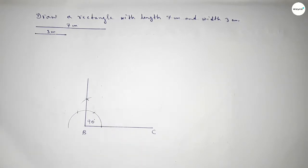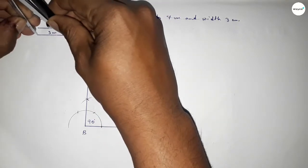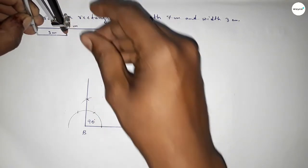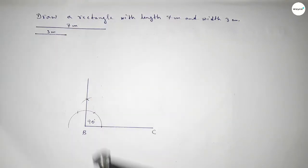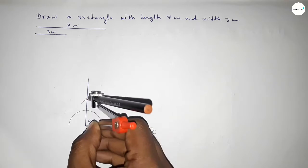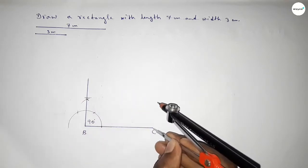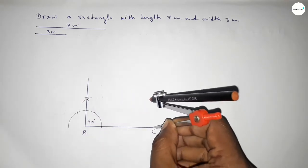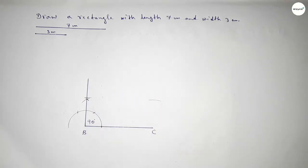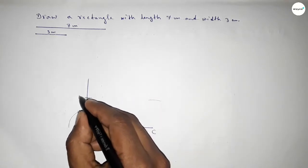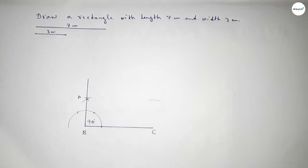Taking the length 3 centimeter using the compass, putting the compass on point B and cutting here to get point A. Also putting the compass on point C and cutting here.